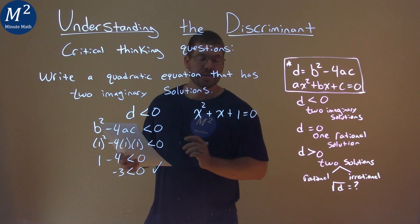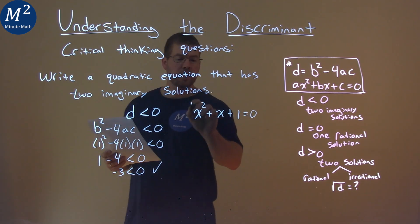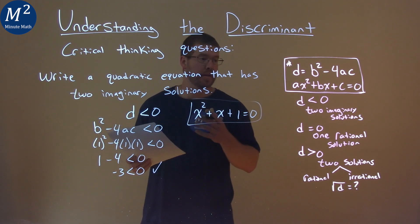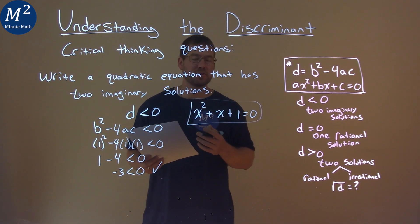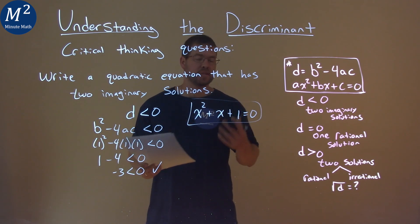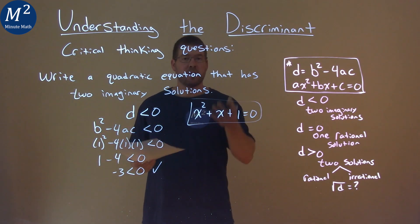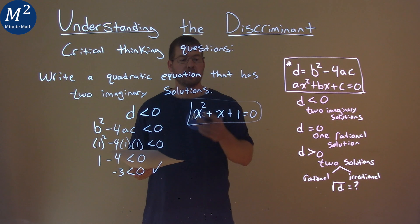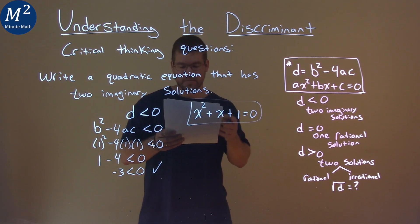Now, this is one quadratic that actually has a discriminant that's less than zero, meaning we have two imaginary solutions, but there are many solutions here. But, for this case, our final answer here is x squared plus x plus 1 is equal to 0.